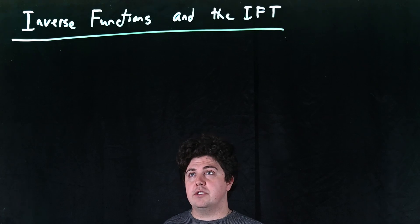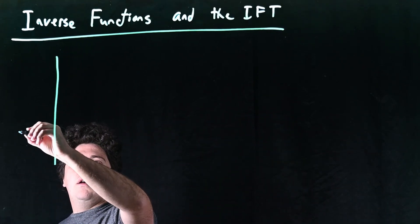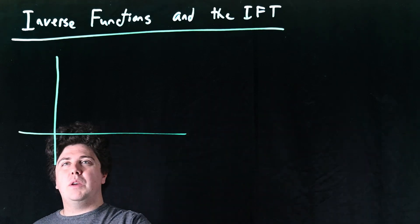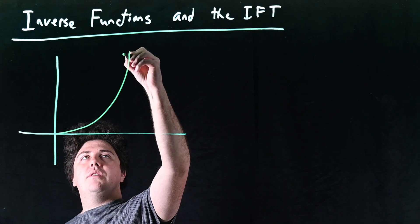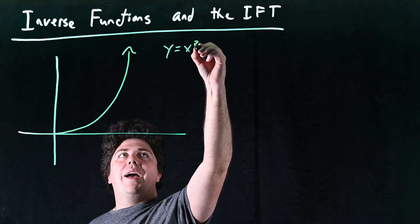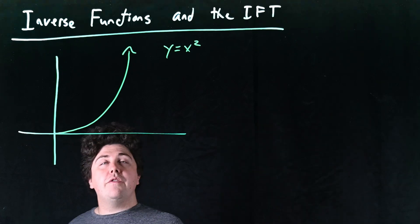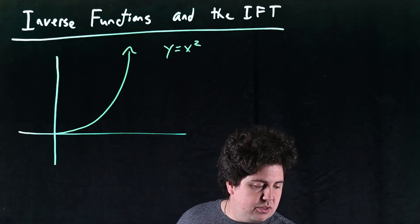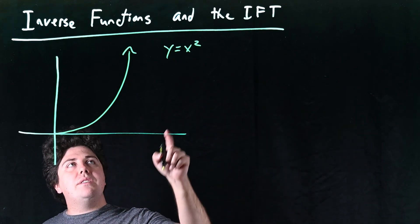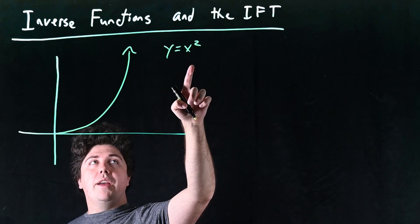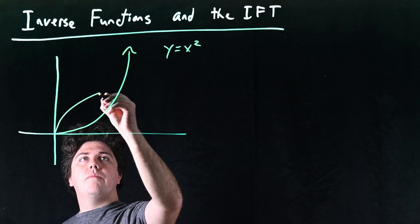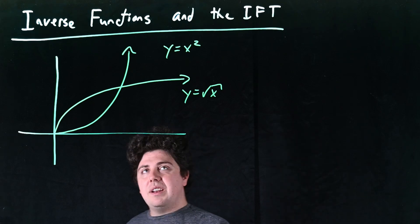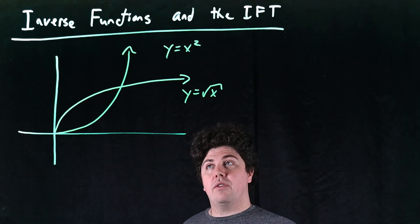So let's remind ourselves how inverse functions work. If we have, let's say, a function like this. Let's say we have a function for positive numbers y is equal to x squared. Well, what's an inverse function? It's a function that if we apply the inverse function to this function, we get back to where we started, back to x. And in this case, it's pretty easy to see what's the inverse of squaring a positive number. Well, it's taking its positive square root.